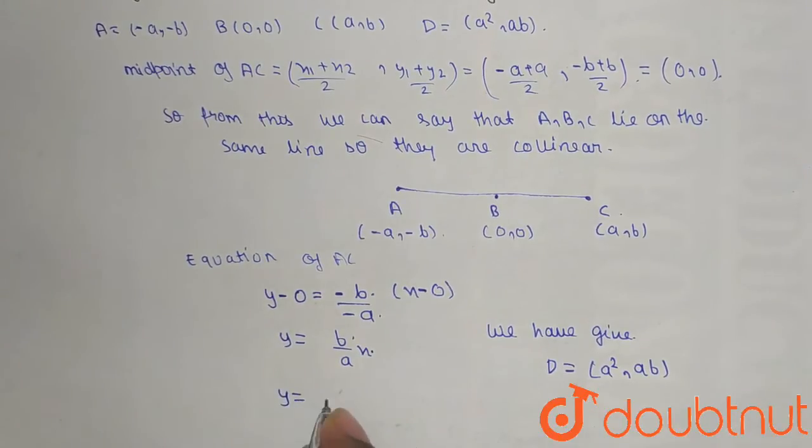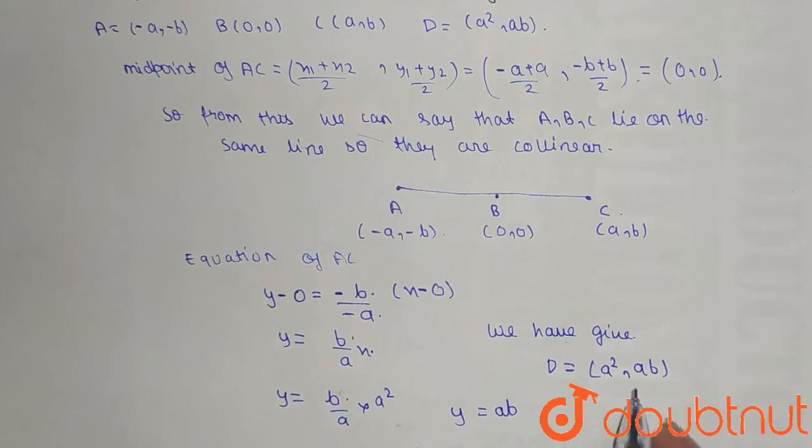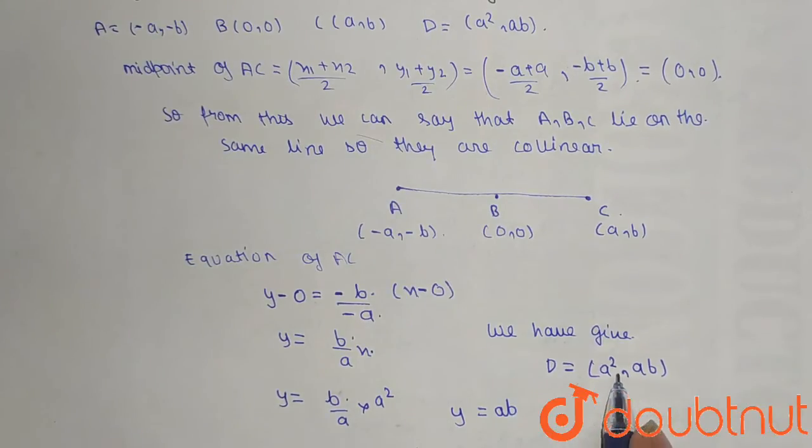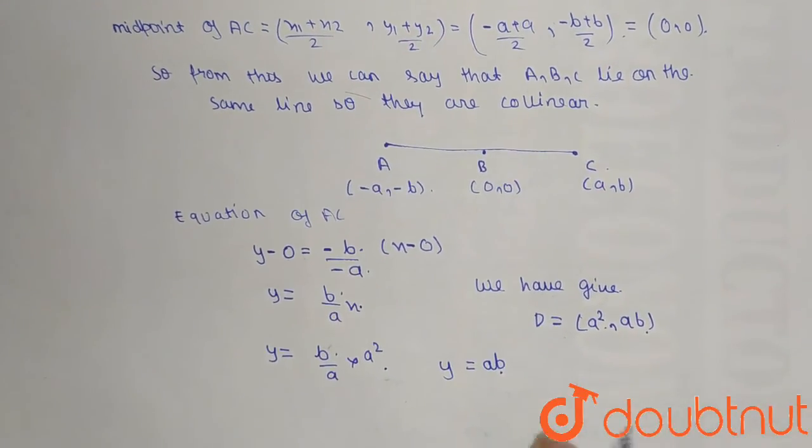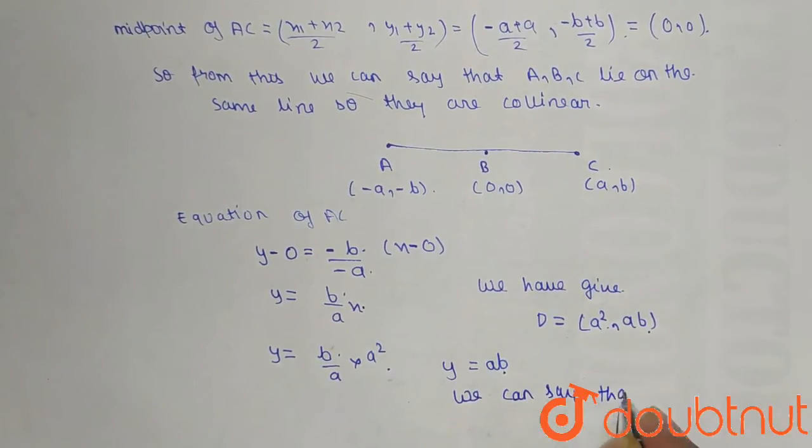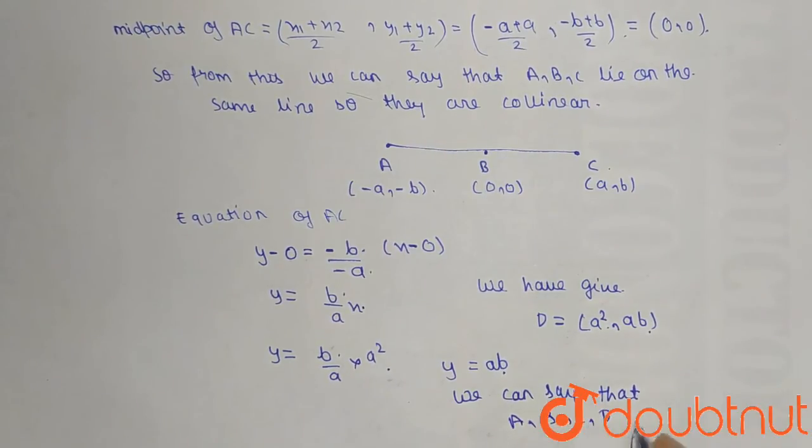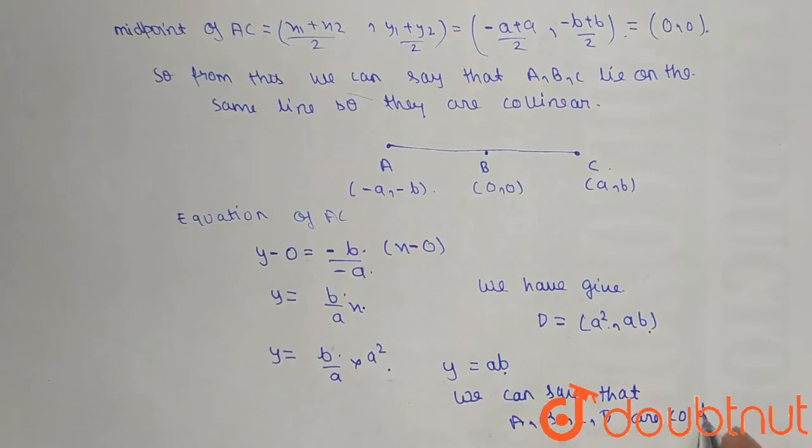So y = (b/a)x, x = a², so the value of y = ab. So from here when we put a² in the given equation, we will get the value of y = ab. So from this we can say that A, B, C, D are collinear.